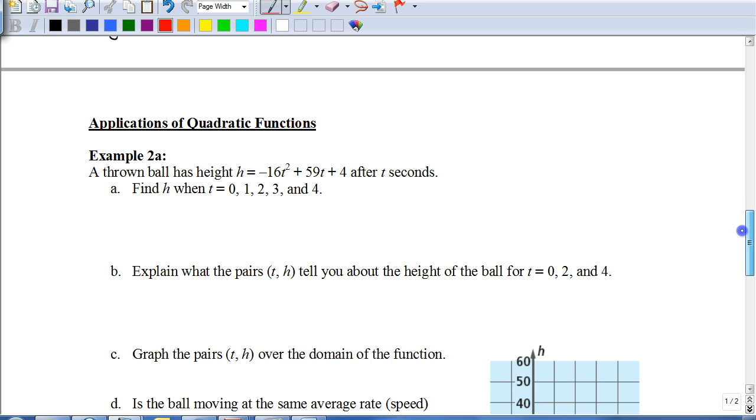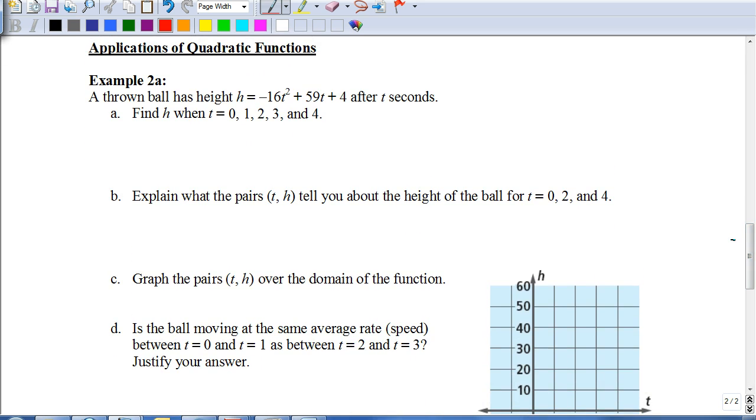Now sometimes they're going to give you the equation, and we have to do some things with it. Let's look at the next example. Here they give us an equation. The ball thrown has a height of negative 16t squared plus 59t plus 4 after t seconds. Find h when t is 0, 1, 2, 3, and 4. So I'm just going to set up a table here to find the height after these certain times of 0, 1, 2, 3, and 4 seconds. So if I put 0 in this equation, I'm going to end up getting 4 as my answer, because 0 squared is 0, and 59 times 0 is also 0, so this first part would be 0 plus 4 is 4. Put 1 in there.